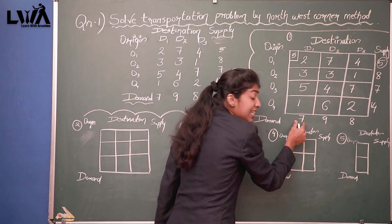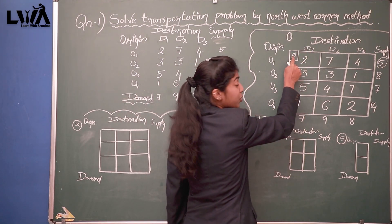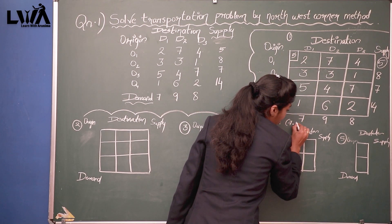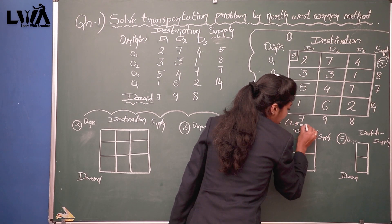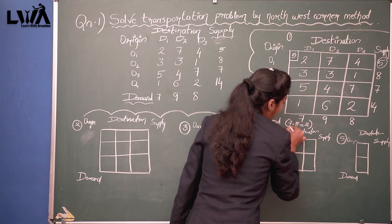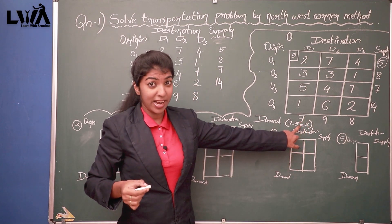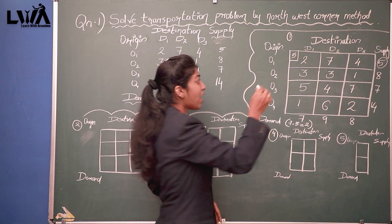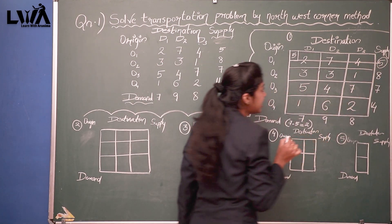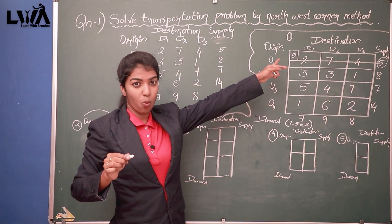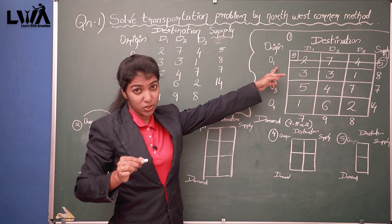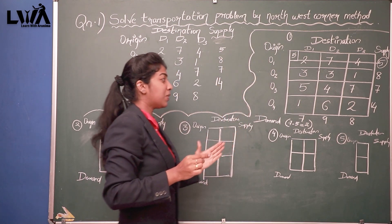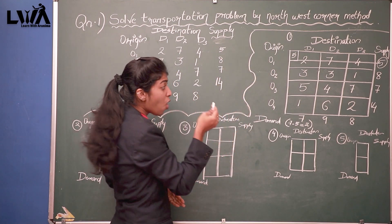From the concerned column we have to subtract this figure: 7 minus 5 equals 2. Draw a bracket and write this. This is the first step, and we have to exhaust the concerned row.